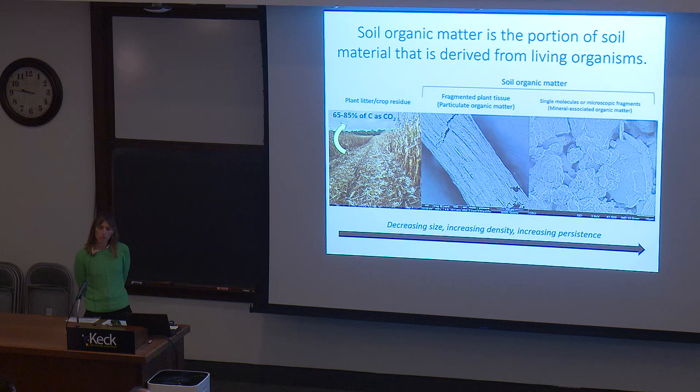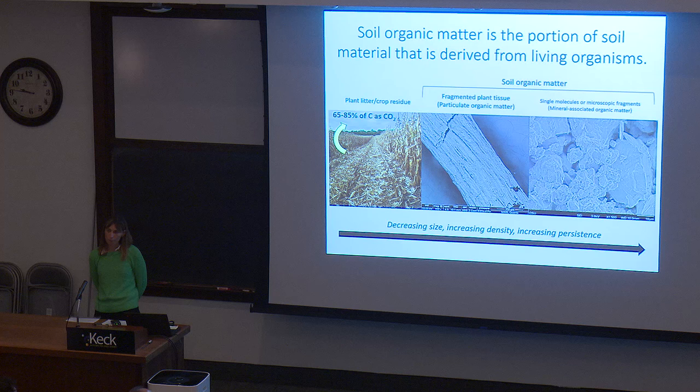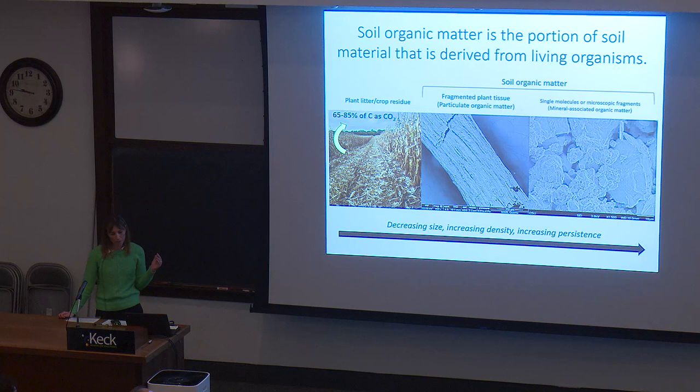Soil organic matter can be thought of as the portion of soil materials derived from living organisms, and most of that is coming from plant litter or crop residue. You can see this example of a cornfield adding a lot of residue to the soil, but only a portion of that actually enters the soil as organic matter. A lot of that carbon is lost as CO2 before it really becomes soil organic matter.